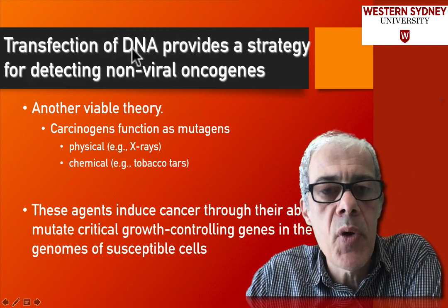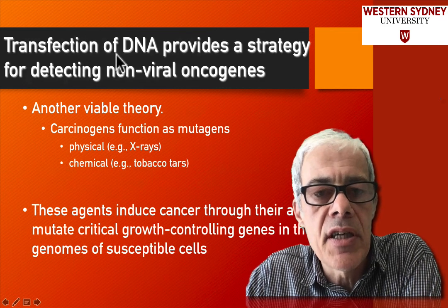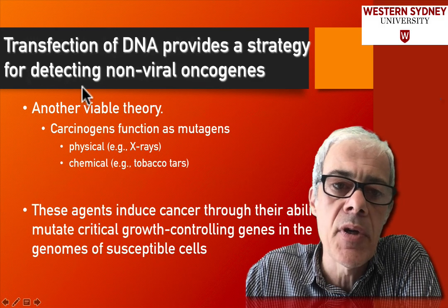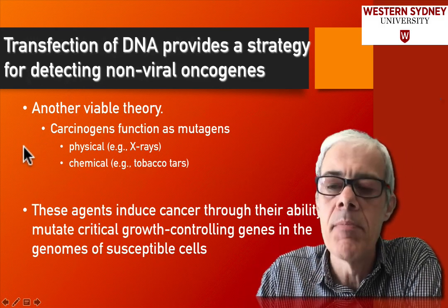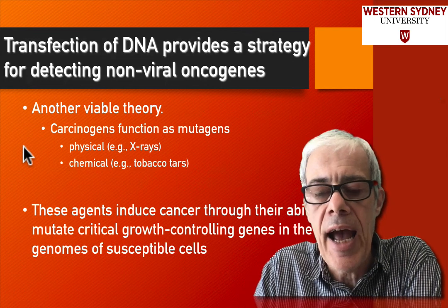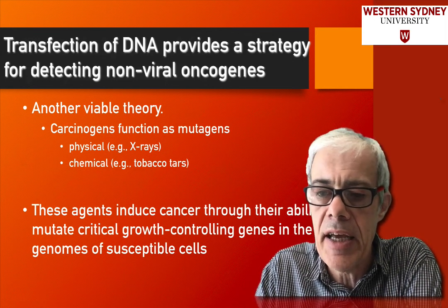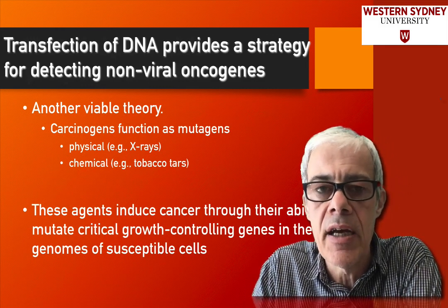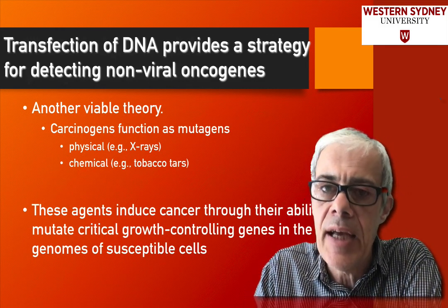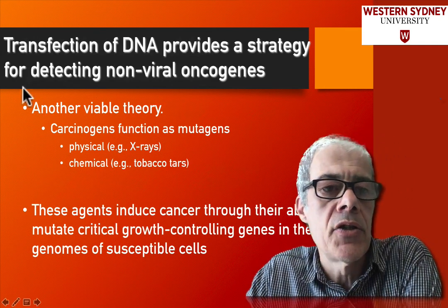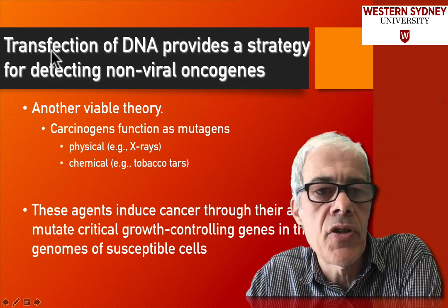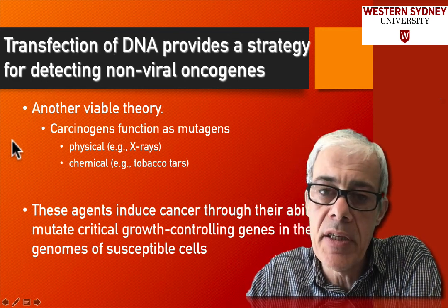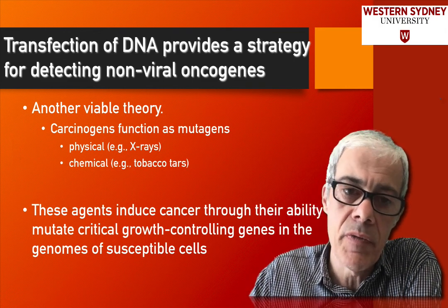At some point in molecular biology, people designed experiments called transfection assays. They were able to take some DNA, put it into human cells, and have that DNA integrate into the genome and be expressed. So they were able to transfect and manipulate cells and look at the effects. This development of a new assay gave people the ability to manipulate DNA, put it into cells, and look for changes.